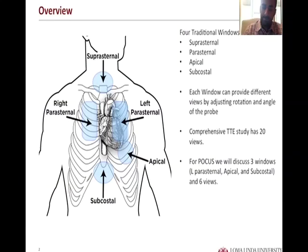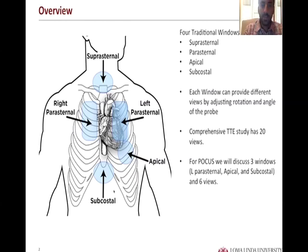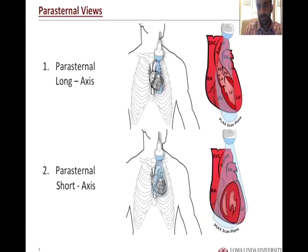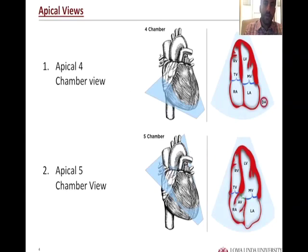The apical window. We've seen the traditional windows or probe placement positions to insonate the heart before. Left parasternal, apical, and subcostal are the main windows that produce the three views for the point-of-care ultrasound area. We talked about the parasternal long and short axis; we're now going to the apical four and five chamber views.